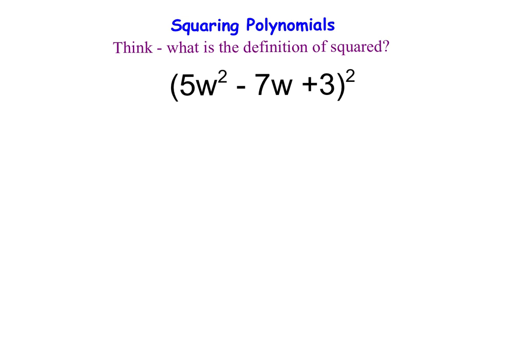So before we actually start solving this, let's pause for a second and really think about what the definition of squared actually means. If we think about this with just a regular number like 5 squared, we know that this is 5 times 5. So what squared actually is, is something times itself.